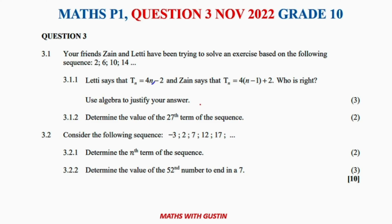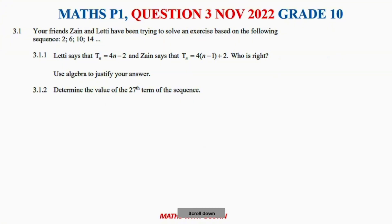The question is divided into 3.1 and 3.2. For 3.1, your friends Zayn and Letty have been trying to solve an exercise based on the sequence 2, 6, 10, and 14. Letty says the nth term is given by Tn = 4n − 2, and Zayn says it is given by 4(n − 1) + 2. Who is correct? Use algebra to justify your answer.